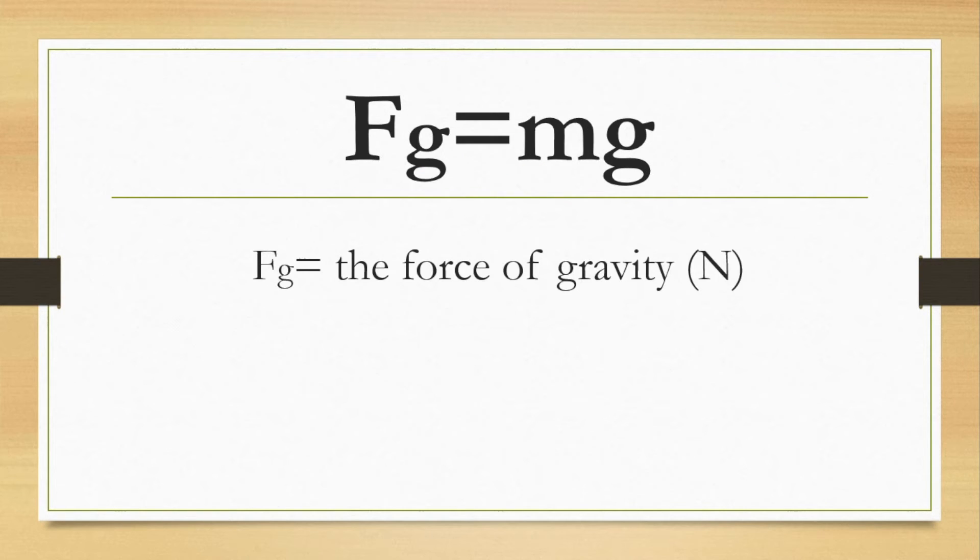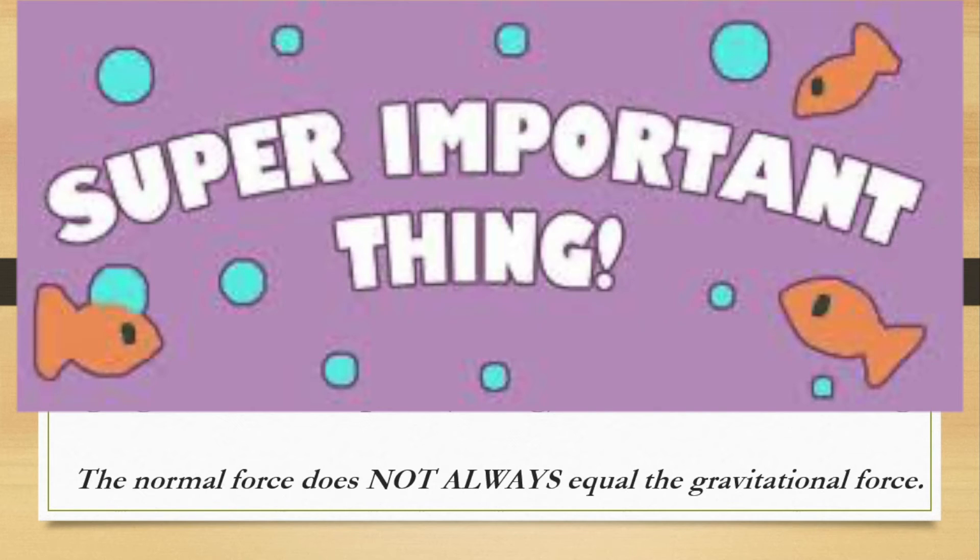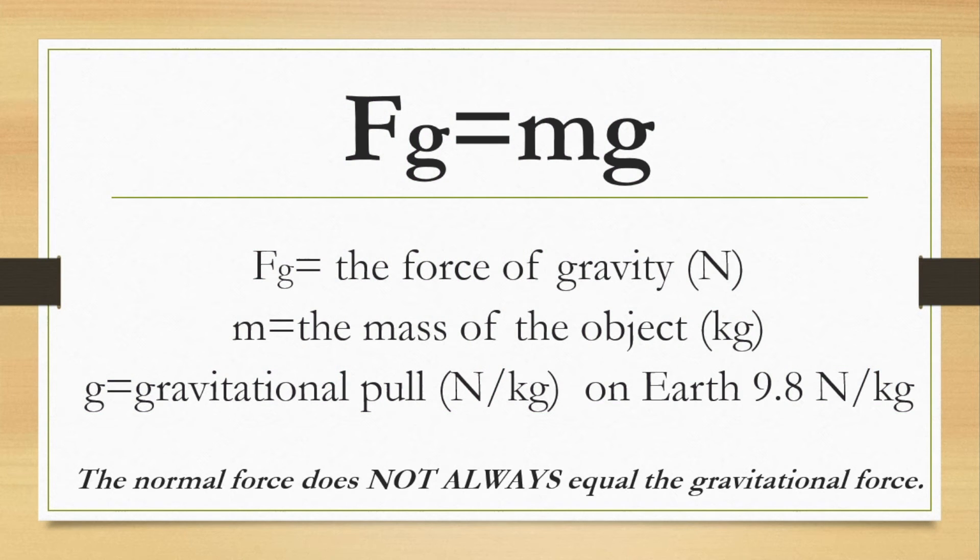Now let's talk about our equation. So the equation that we're going to use is Fg equals M times G. And again, Fg just stands for the force of gravity. M stands for the mass of the object, and G stands for the gravitational pull on earth. In this case, that's just 9.8 Newtons per kilogram. If we were on a different planet though, that little g would have a different value. But for the sake of all of our problems, unless it's mentioned otherwise, we can assume that G will just be 9.8. The normal force does not always equal the gravitational force. We said it before that that's only the case when it's on a flat surface, but it is not always the case. So please, please, please pay attention to this. Super important.